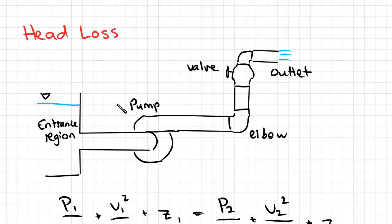Now head loss accounts for the effect that these connections and pipe properties have on flow velocity and pressure. So what we're going to do in this video is find out how to account for these losses, and the way we do this is considering the amount of energy that's lost.